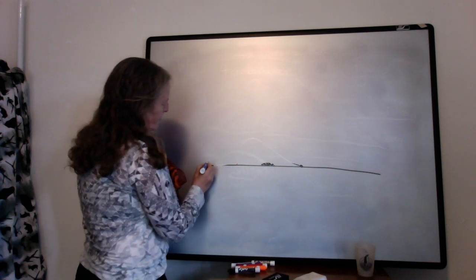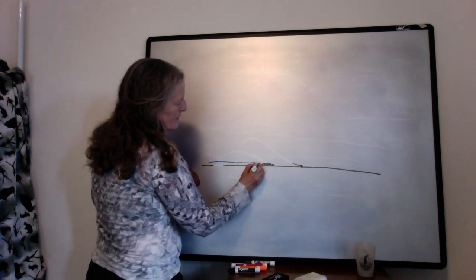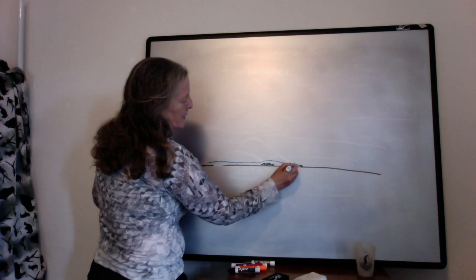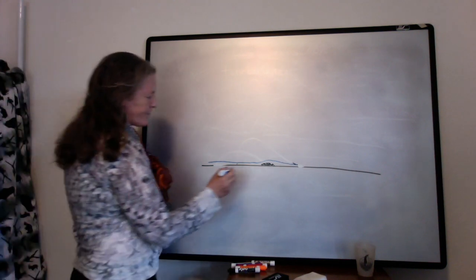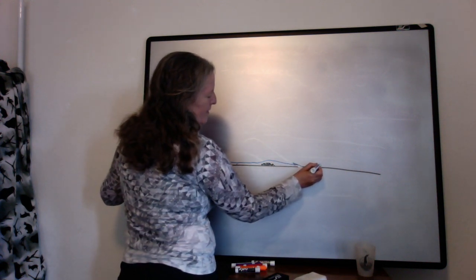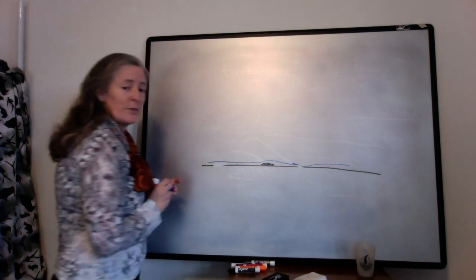So if we have our flow coming in like this, this pile of grains deflects it upward, and then the flow has some momentum, and it often shoots downstream. As it gets closer to the bed again, maybe it sort of digs up into the grains right here.